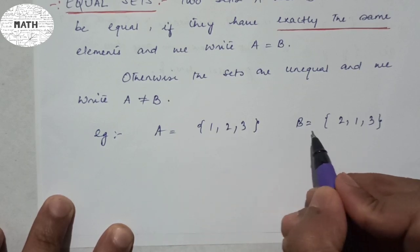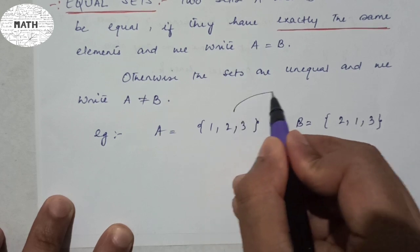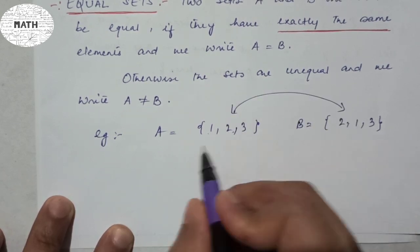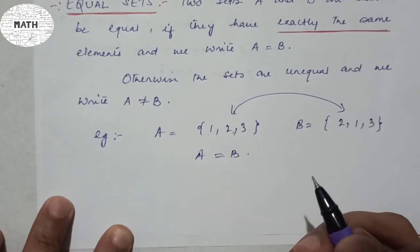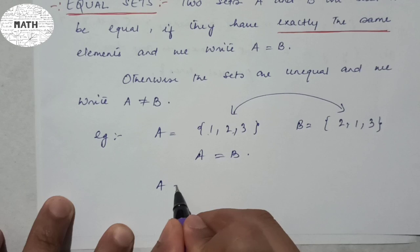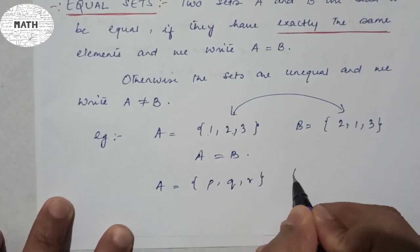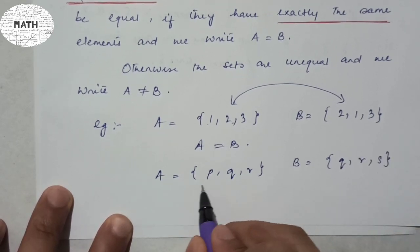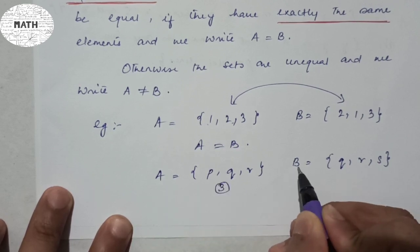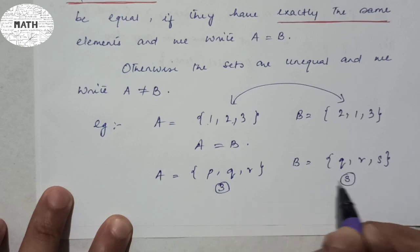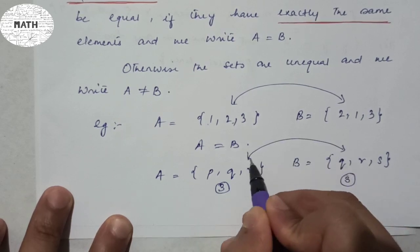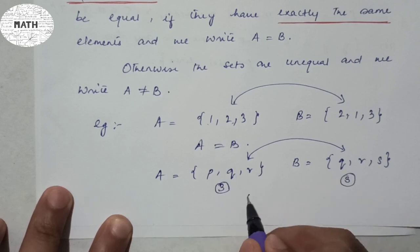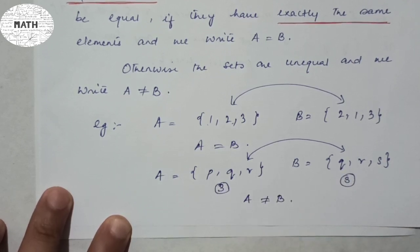For example, if A = {1, 2, 3} and B = {2, 1, 3}, comparing elements we get matching pairs, so A = B. But if A = {p, q, r} and B = {q, r, s}, though both have three elements, the elements are not exactly the same, so A ≠ B.